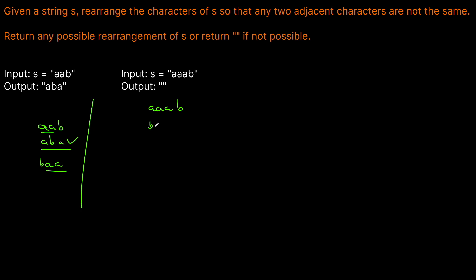When we have AAAB, there's nowhere we could put the B that would prevent two A's from being next to each other. We could do BAAA, ABAA, or AAAB — none of those work. So in this case we return an empty string.